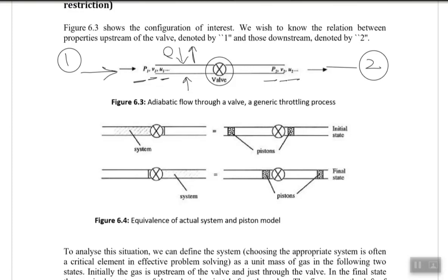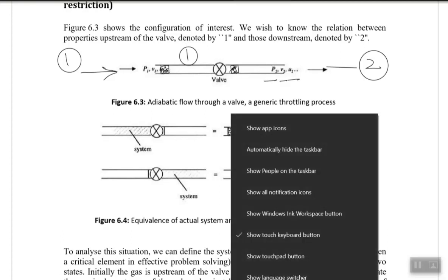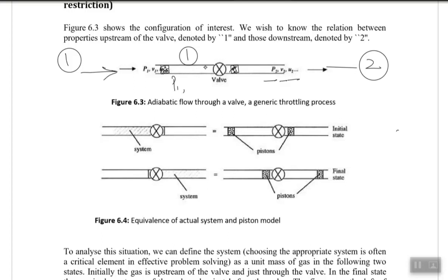Imagine a pipe with a wall somewhere in it. At state one, we have a volume of gas with an imaginary piston. We have a volume of gas at state one with pressure P1, volume V1, and internal energy U1. This is our state one. Please make sure the wall is included in the system — I will explain this a little bit later.